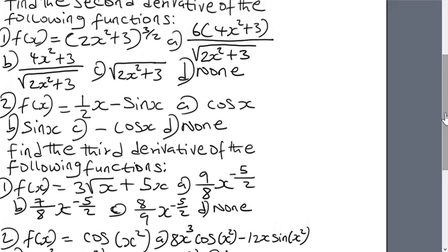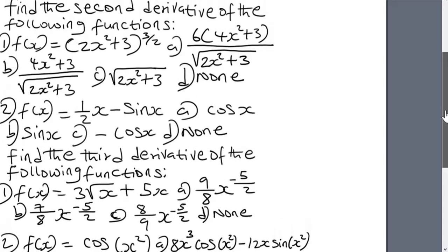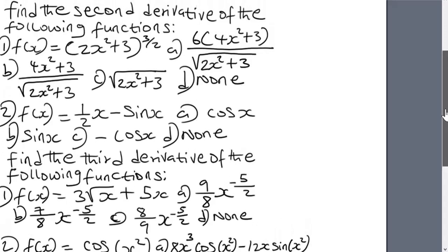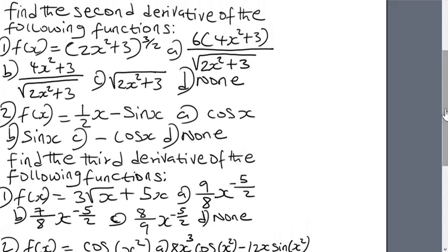We are going to differentiate those that involve trigonometric identity and those that don't involve trigonometric identity. Now let's get the Casio calculator.